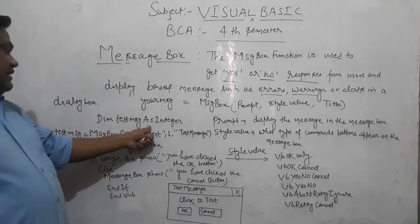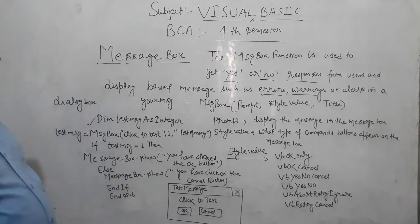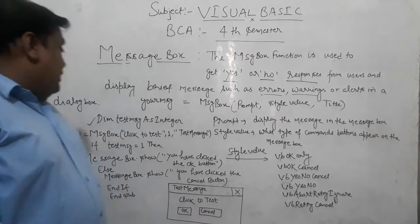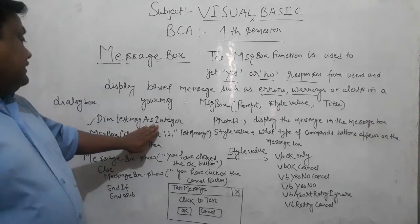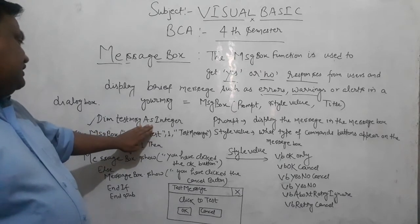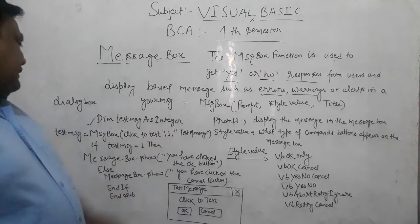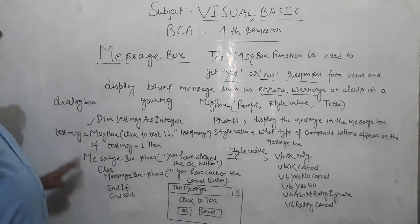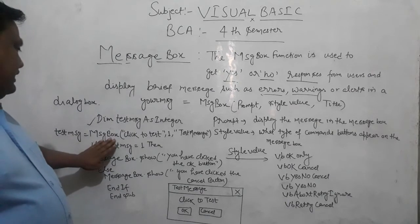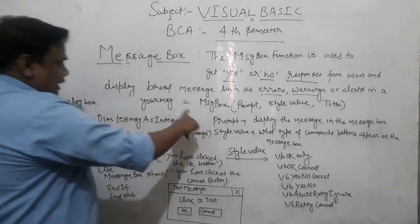In the code: dim test_masses as integer. As I have told you in some programs, dim is used to declare a data type. Here, test_masses is declared as integer. We use message box with a click-to-test button and a test message.